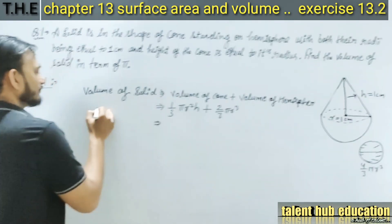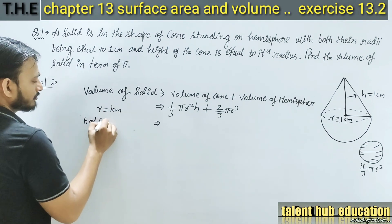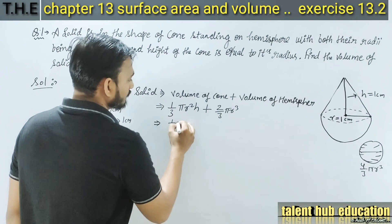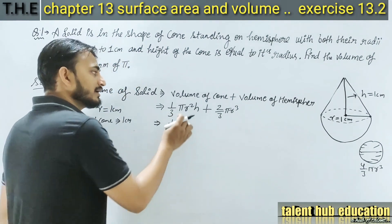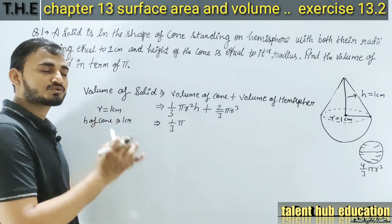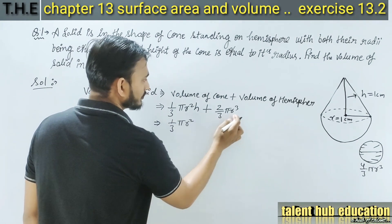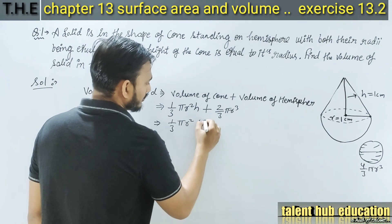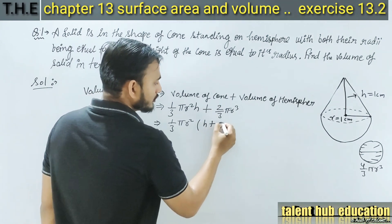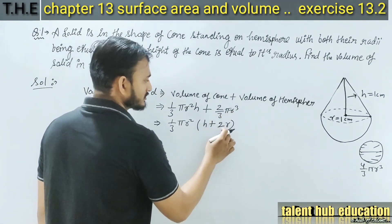अब यहां पे value रख दूंगा। Radius 1 cm है और h of cone भी 1 cm दिया हुआ था। तो (1/3) pi r square h + (2/3) pi r cube। यहां से pi और 1/3 common आ जाएगा, r square भी common आएगा। तो 1/3 pi r square [h + 2r] बनेगा।